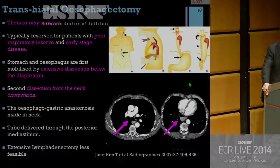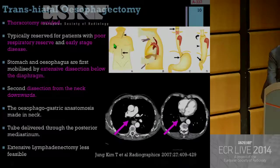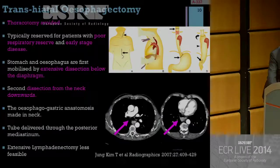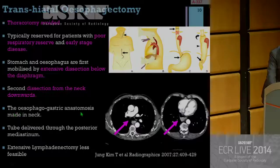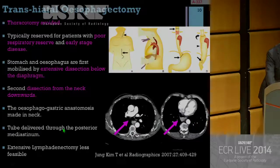The transhiatal esophagectomy avoids thoracotomy, which is a major advantage for patients with poor respiratory reserve and early stage disease. There are two incisions: a neck incision and an abdominal incision. Through the abdominal incision, the stomach, esophagus, and distal thoracic esophagus are mobilized; from the neck incision, dissection proceeds downward. The esophageal-gastric anastomosis is performed in the neck and the tube is delivered through the posterior mediastinum. One limitation compared to other procedures is that extensive lymphadenectomy is less feasible, so it's not appropriate for extensive disease.